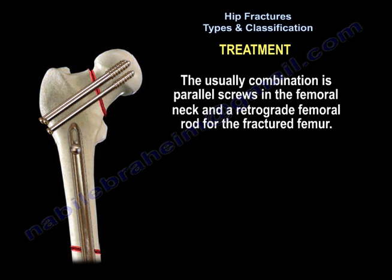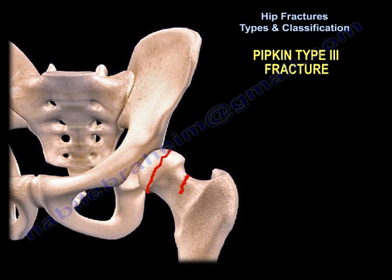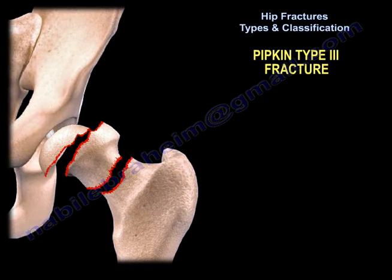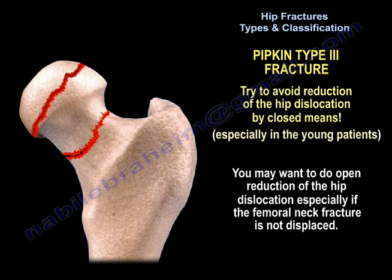The treatment of these associated fractures is to fix the femoral neck fracture first, followed by the femoral shaft fracture. The usual combination is parallel screws in the neck and a retrograde femoral rod for the femur fracture. Another interesting fracture is the type 3 Pipkin fracture: fracture of the femoral head plus dislocation of the hip plus fracture of the femoral neck. Try to avoid closed reduction of the hip dislocation — you may want to do an open reduction, especially if the femoral neck fracture is not displaced.